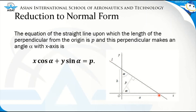Consider our illustration. We have line L, and if we wish to get the nearest distance of this line from the origin, we drop a perpendicular line from the origin to the line. We let this angle be alpha, which denotes the angle of inclination from the positive x-axis going to our perpendicular line, and let its length be denoted by p. The value of p is positive if our y-intercept is positive, and negative if our y-intercept is negative.